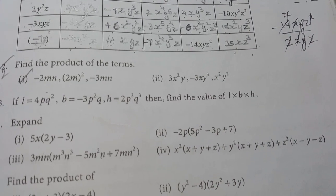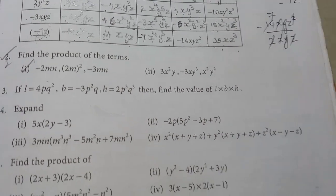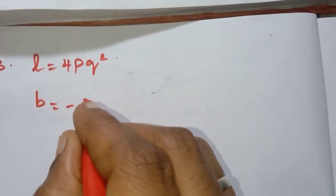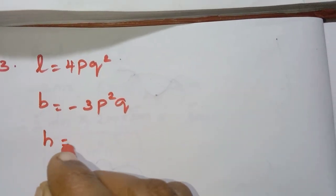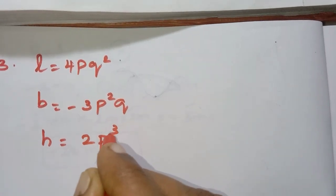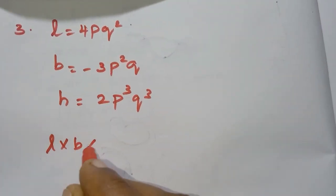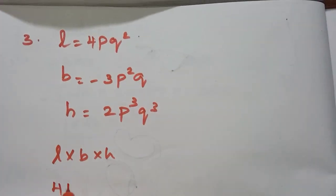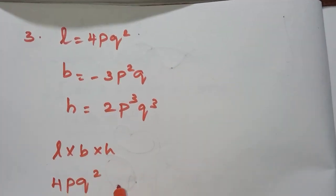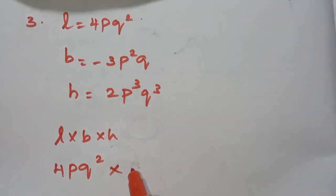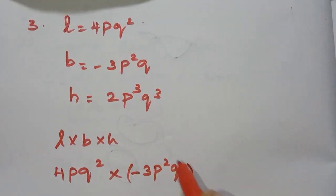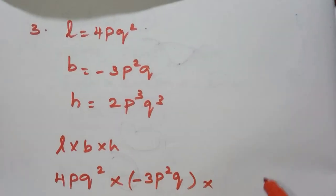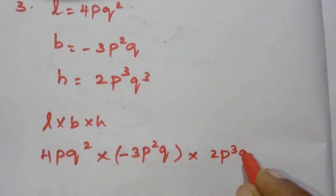If l is equal to 4pq², b is equal to minus 3p²q, and h is equal to 2pq³. So we need to find the value of l into b into h — that is length into breadth into height.